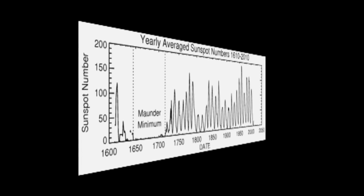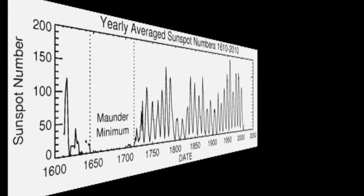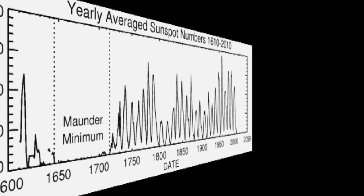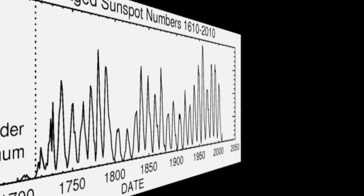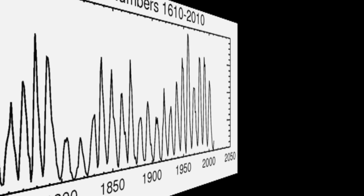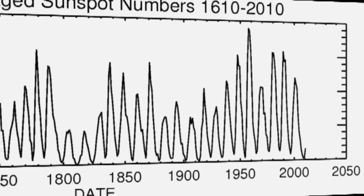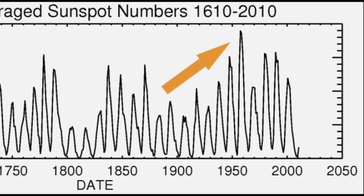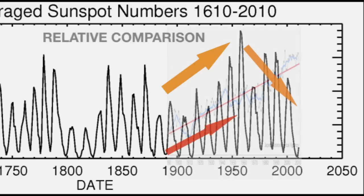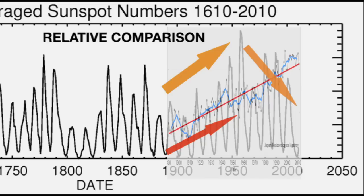Before satellites, solar energy had to be estimated by more indirect methods, such as records of the number of sunspots observed each year, which is an indicator of solar activity. These indirect methods suggest there was a slight increase in solar energy during the first half of the 20th century, and a decrease in the latter half. The increase may have contributed to warming in the first half of the century, but that does not explain warming in the latter part of the century.